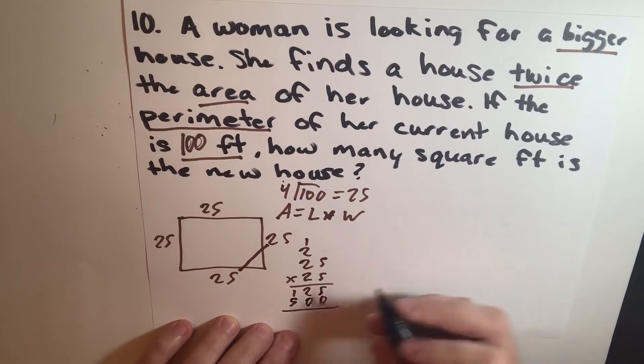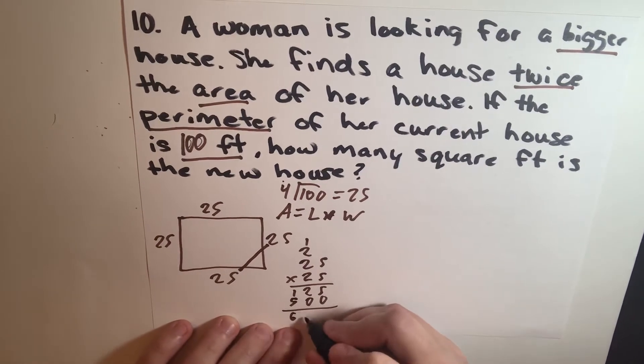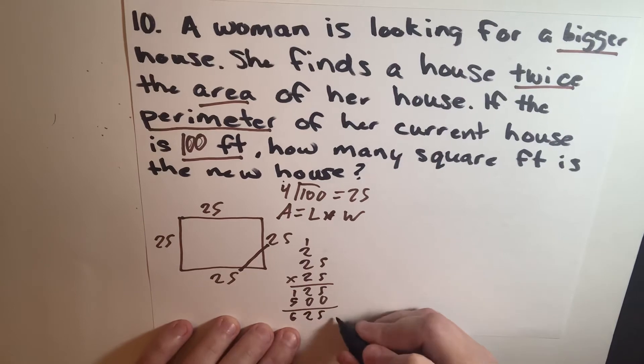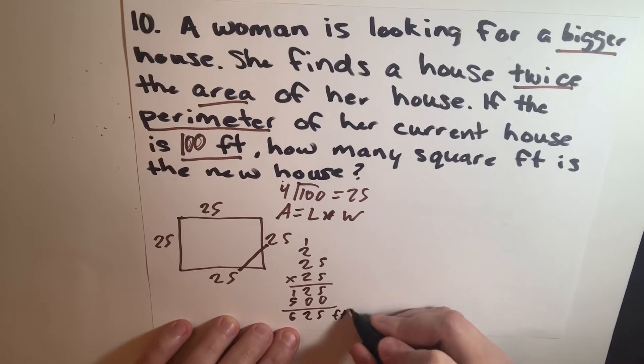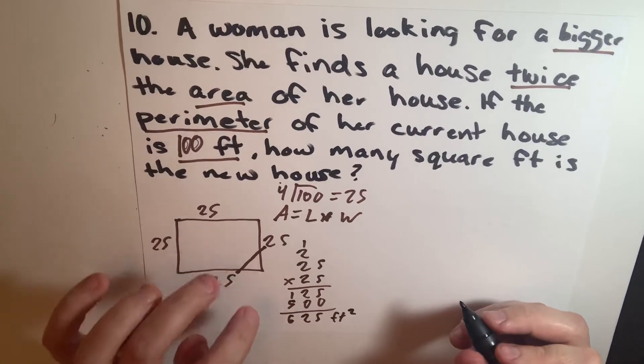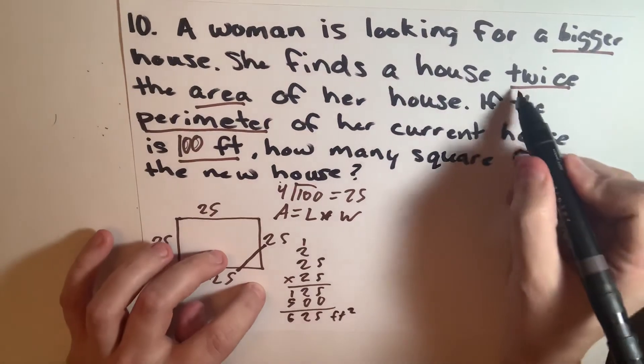5, so the answer is 625 feet squared. That's the area for her old house. Remember, her new house is twice the area.